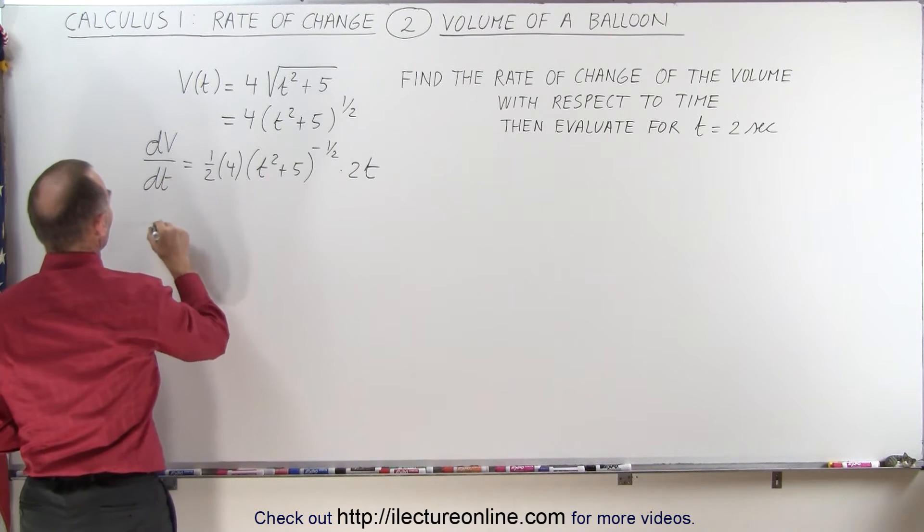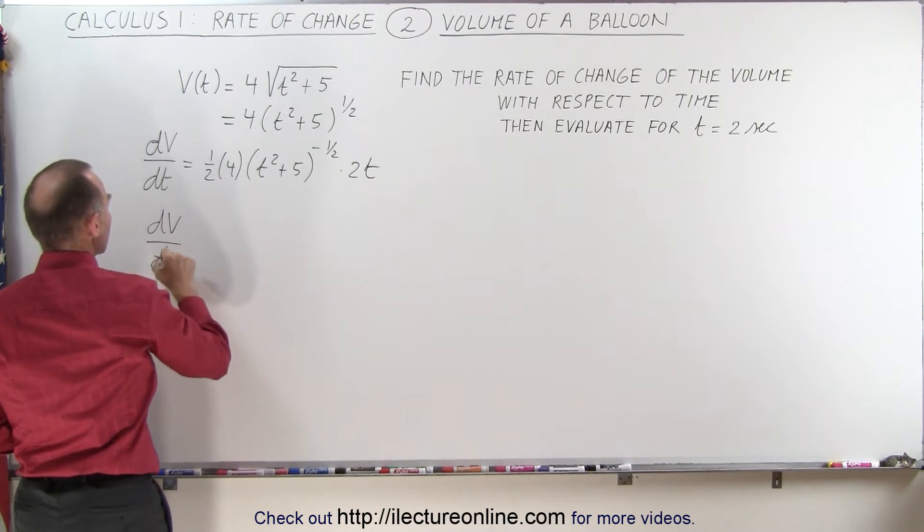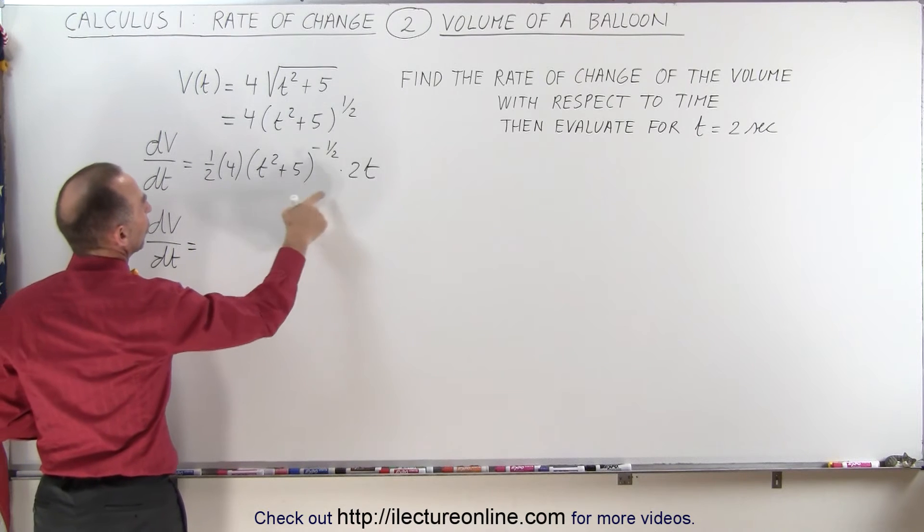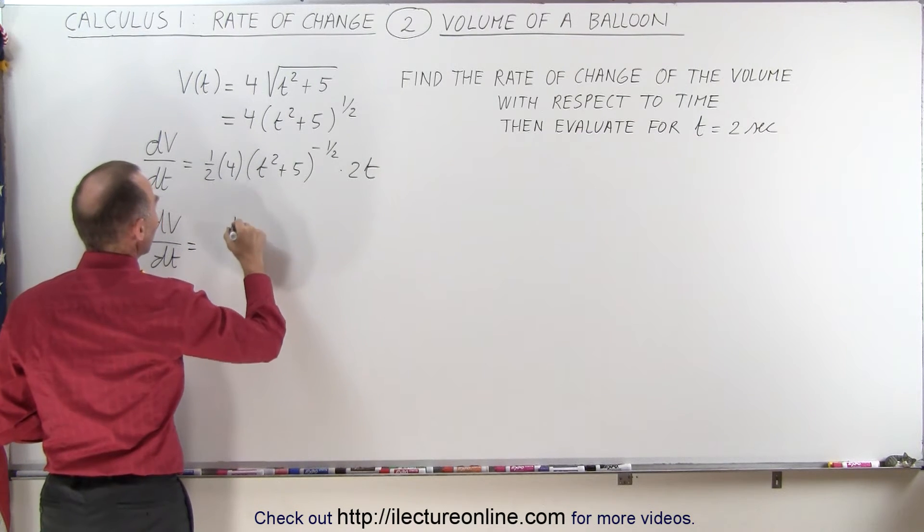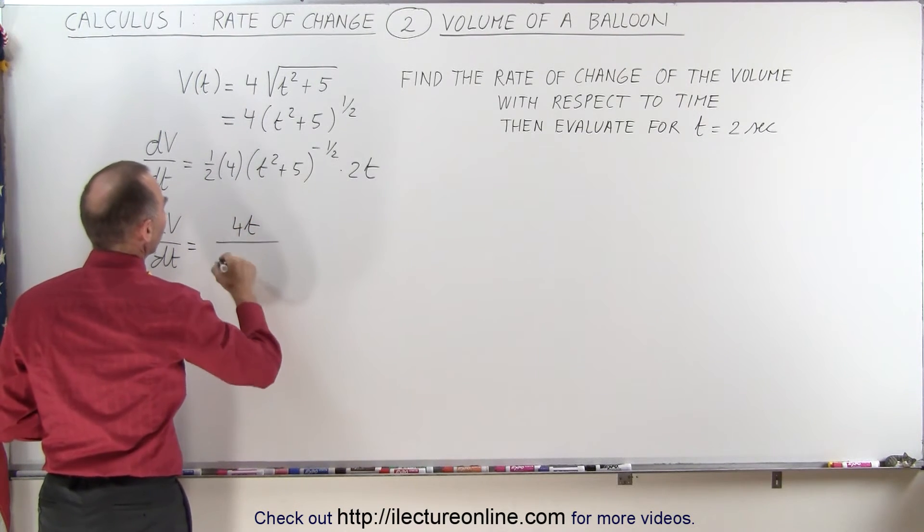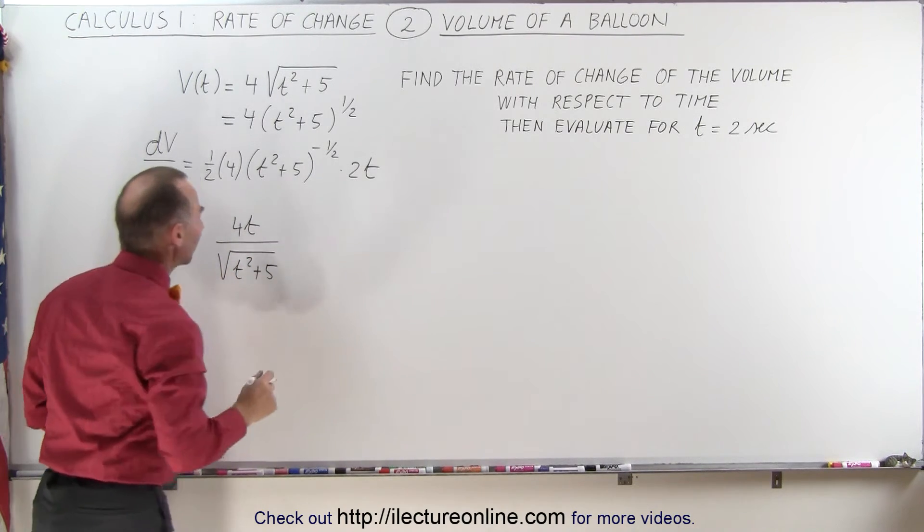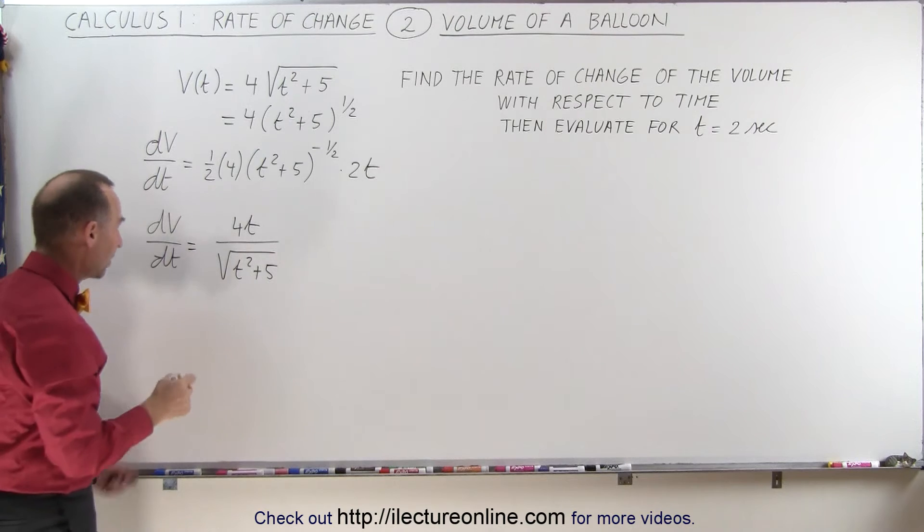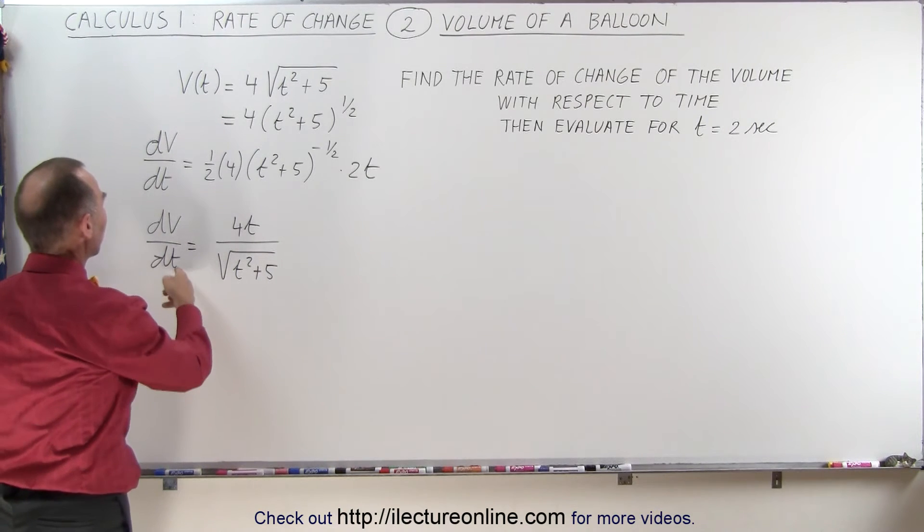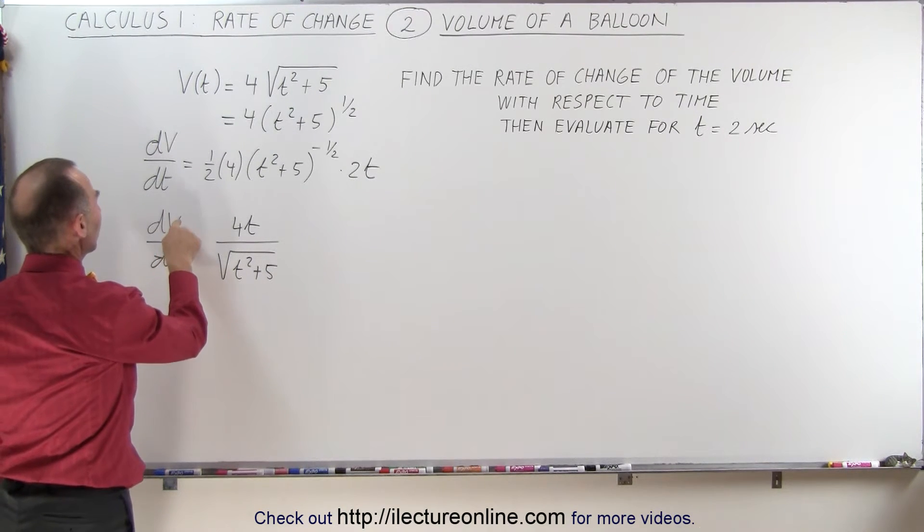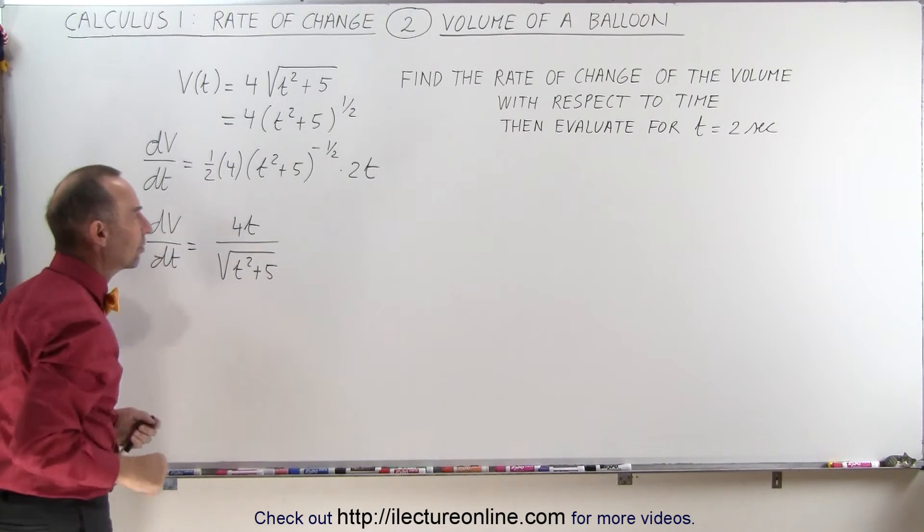Now the 1/2 and the 2 will cancel out, so this becomes equal to dV/dt is equal to 4 times t divided by the square root of t² + 5 in the denominator. So now what we have here is we have an equation that describes the rate of change of the volume with respect to time.